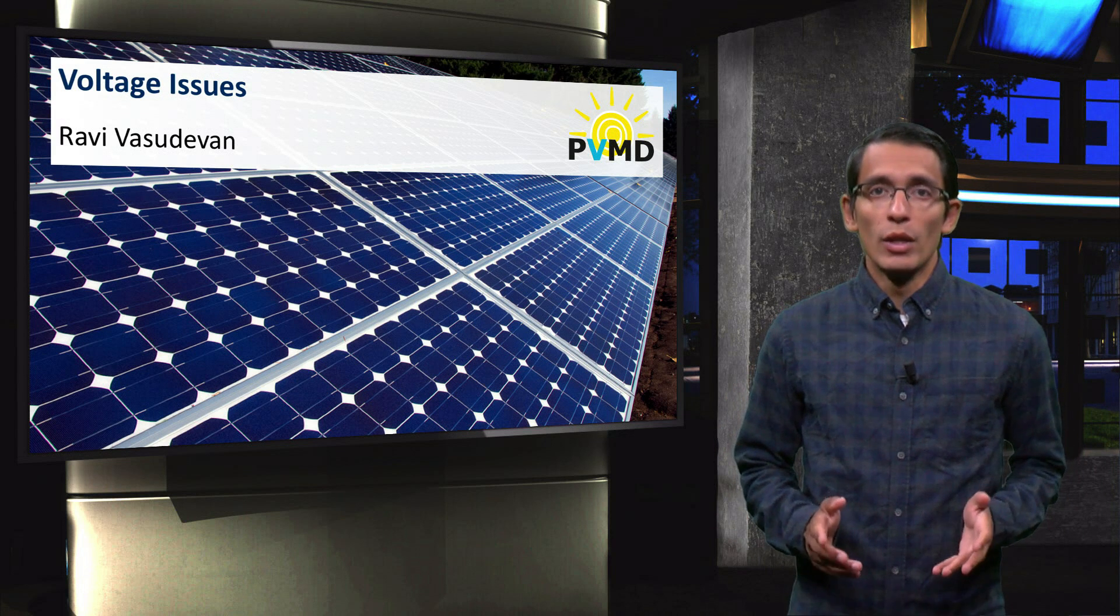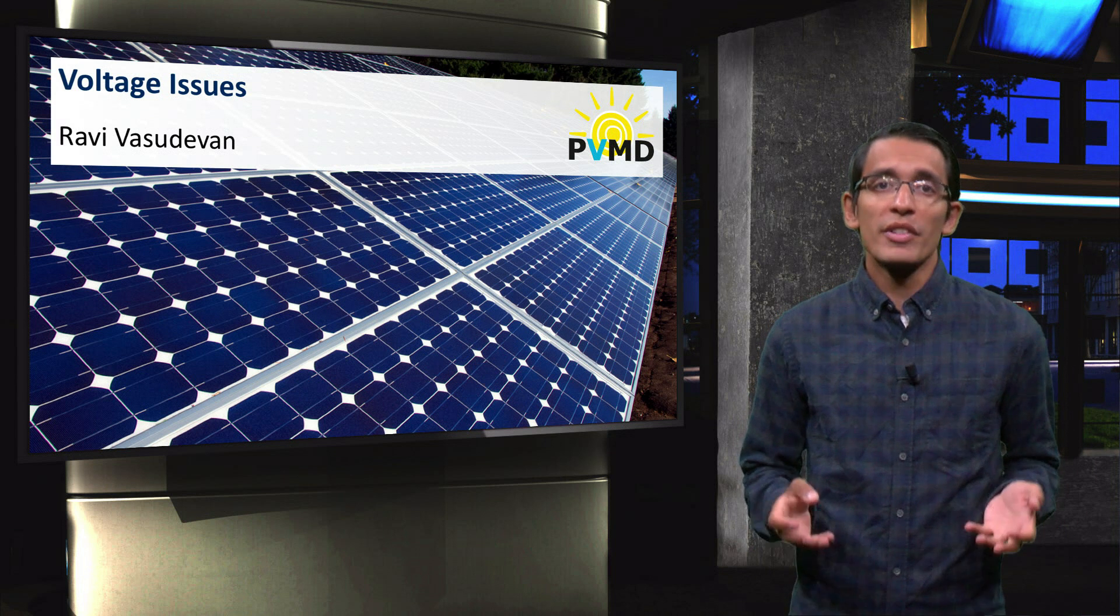As we have seen in the introduction video, connecting an intermittent power supply, such as PV, to the grid will cause some issues.